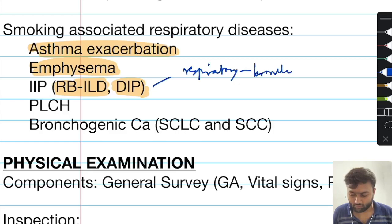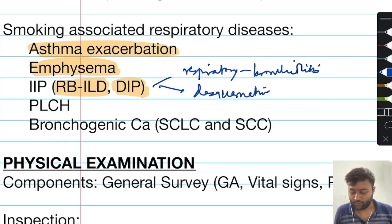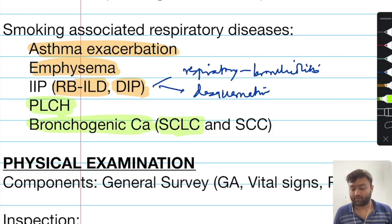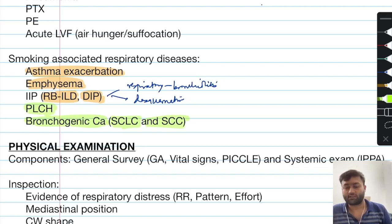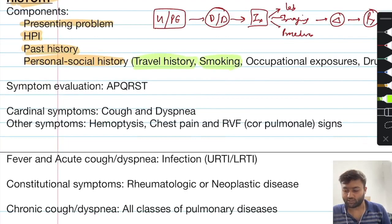Similarly, pulmonary Langerhans cell histiocytosis and bronchogenic carcinoma — including squamous cell lung carcinoma and small cell lung carcinoma — are two cancers very strongly associated with smoking exposure. These are the various groups of respiratory diseases that can be linked to smoking.